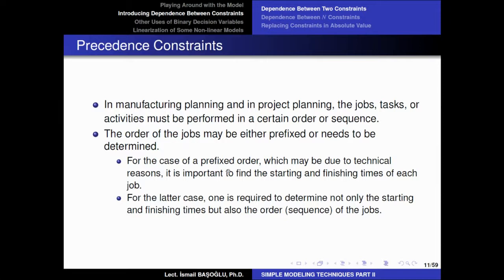Imagine you have a prefixed order, possibly due to a technical reason, and we are trying to define the starting and finishing times for each job. For the other case, we need to determine both the starting and finishing times of the tasks and also the sequence of jobs. For example, in the first type, you may say there are two tasks A and B, and A should be completed before B is started — A precedes B — so before finishing A you can never start B.